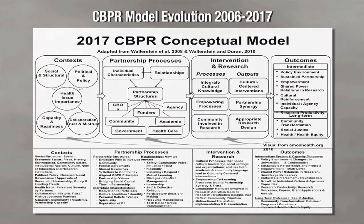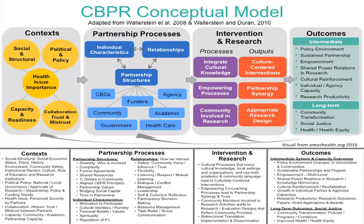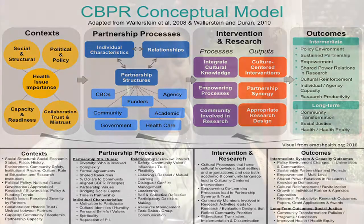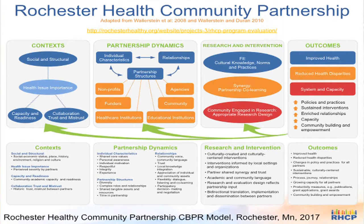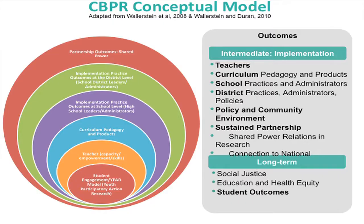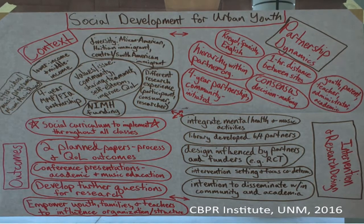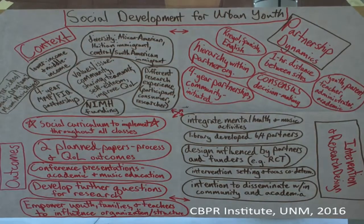The model we have right now is the most current iteration of that. One of the foundational principles is that it will never be finished — it will continue to evolve, and different iterations will come out as our work continues, changing depending on the communities we're working with and the context we're in. So it's not meant to be seen as the way community engagement happens, but as a guide to start investigating what brings people together in a way that promotes trust and equity.